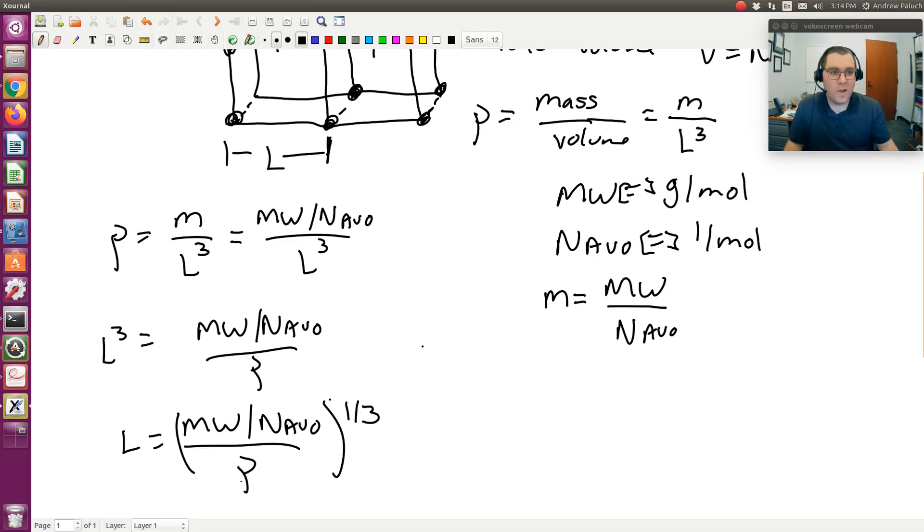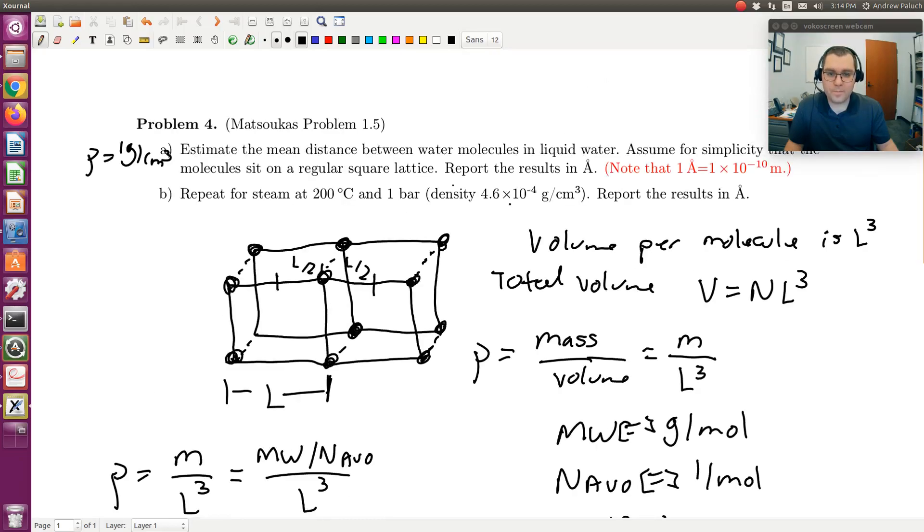So for A, density of water, I'll plug in 1 gram per centimeter cubed. For B, density of liquid water is 1 gram per centimeter cubed. Density of steam at 200 degrees C and 1 bar is 4.6 times 10 to the negative 4, so four orders of magnitude smaller.